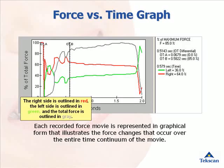Each T-Scan recording gives you a force versus time graph. The gray line represents the maximum force percentage. The black vertical line shows you where you are in time for that recording. The red line represents the percentage of total force on the right side, and the green line represents the percentage of total force on the left side of the arch. The OT-A and OT-B lines allow for time calculation, measuring the time between two points — for example, how long did it take for this patient to occlude.